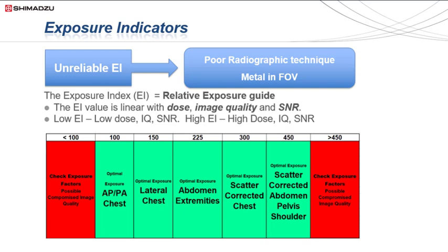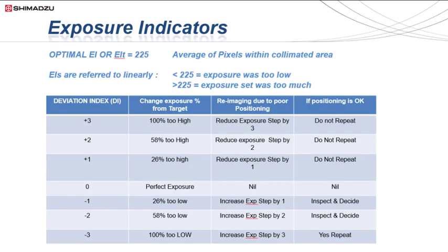A low EI results in a low dose, low image quality, and lowered SNR. High EIs give higher dose, better image quality, and higher SNR. Halving the EI will inherently halve the dose. Exposure indicator values are an average of the number of pixels within a collimated area and are relative to the amount of contrast within the image.